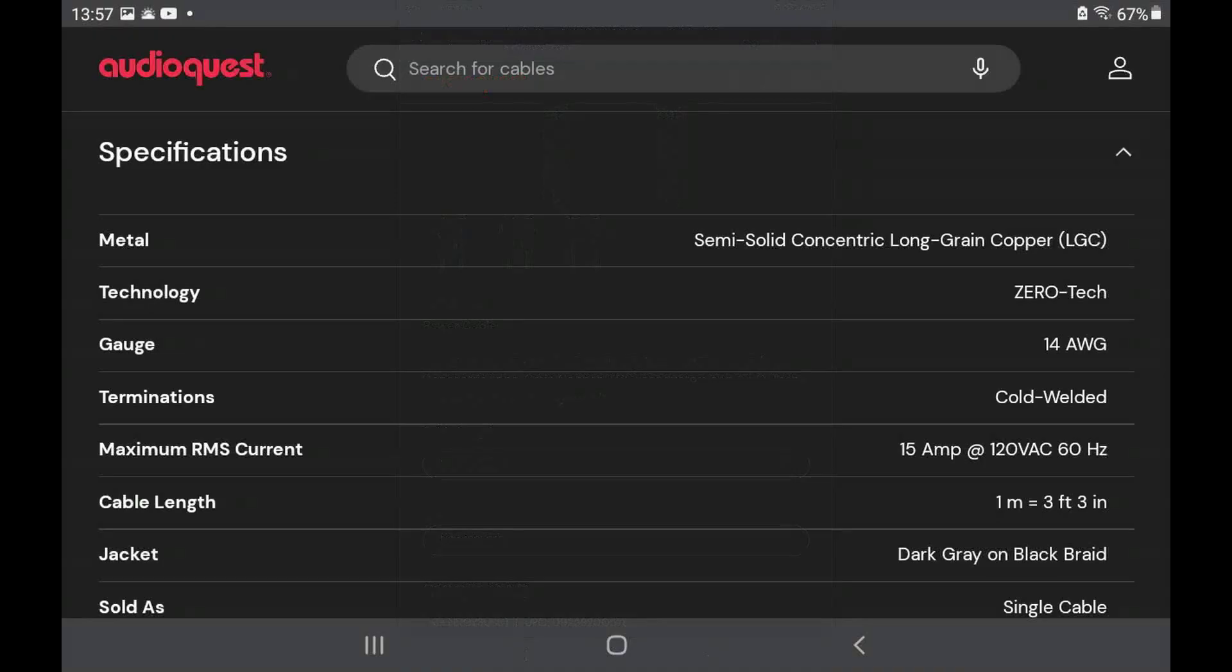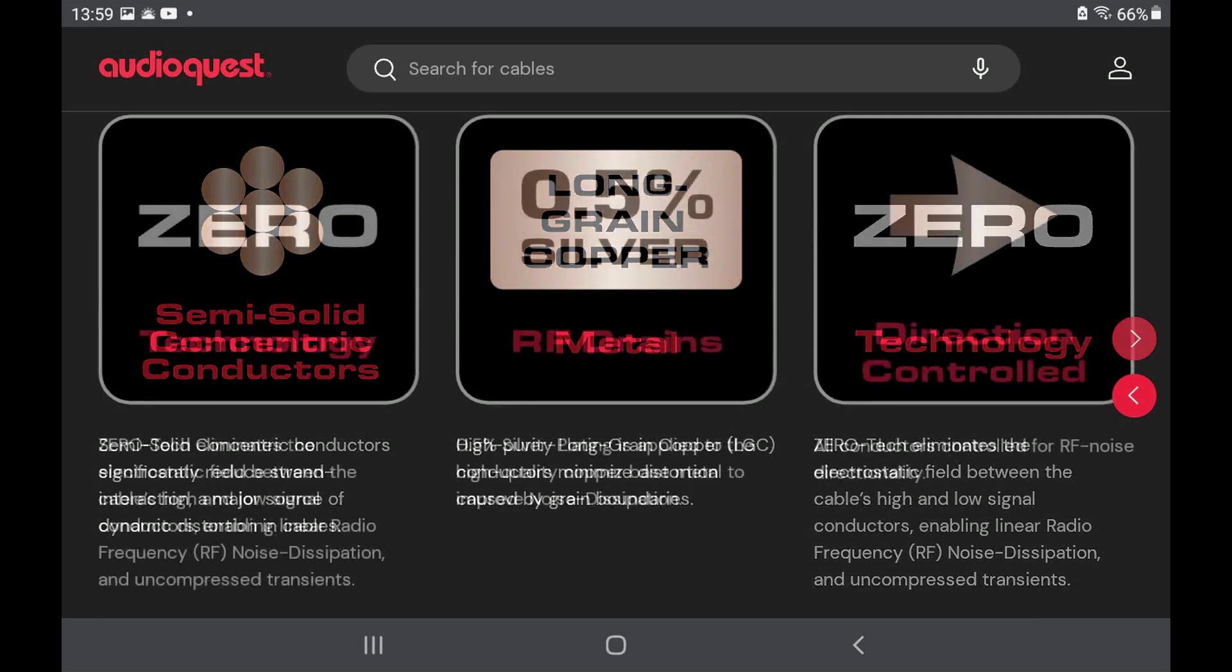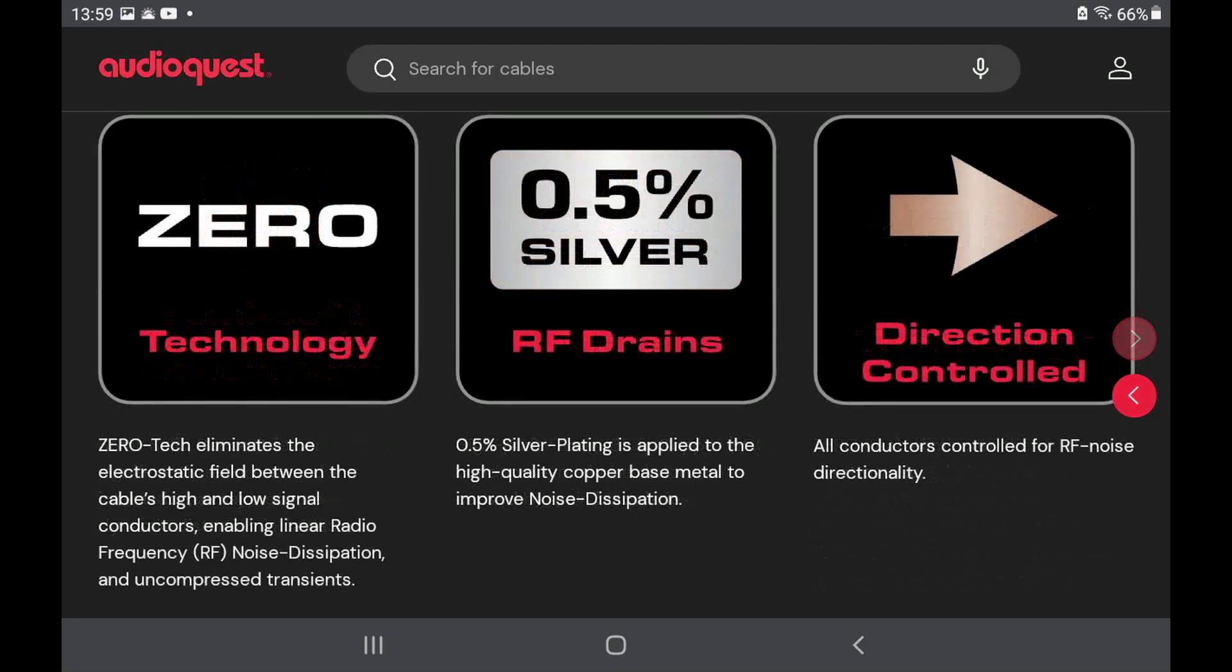That said, it is difficult these days to compare products based on quantitative parameters such as wire gauge and purity of the wire. Instead we are offered narratives about copper grain characteristics, alignment of conductors, RF noise dissipation and the like.